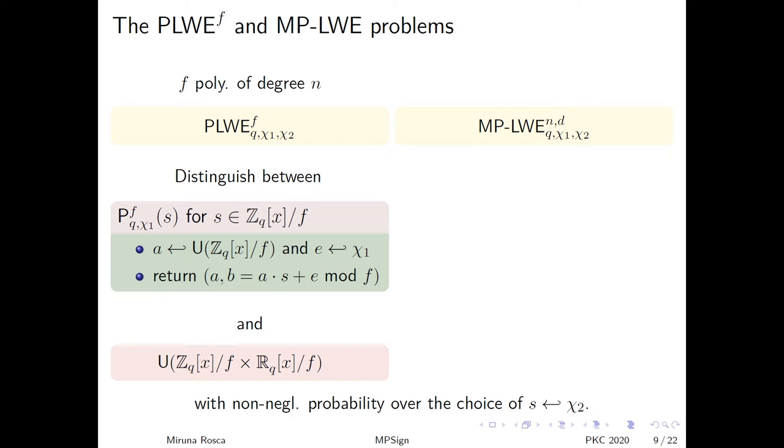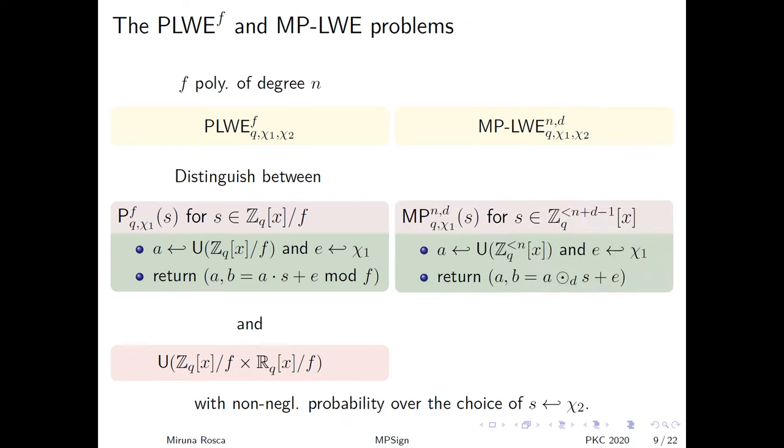The middle product learning with errors problem has been defined similarly. Still, here there is no polynomial f involved. The problem is based on a distribution which, for a fixed polynomial s, outputs pairs a, b, where a is uniformly random among polynomials of degree less than n, and b is computed as a middle product s plus e. I recall that the middle product of degree d of a and s is computed in the following way. You take a and s, you multiply them, you get a new polynomial, you extract the middle d coefficients, and then you create out of them a new polynomial of degree d. The problem asks you to distinguish between this distribution I have just described and the uniform one with non-negligible probability over the choice of s.